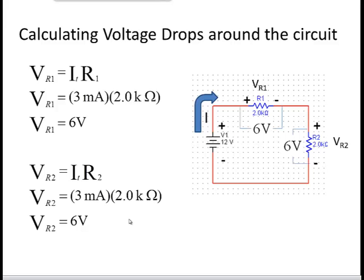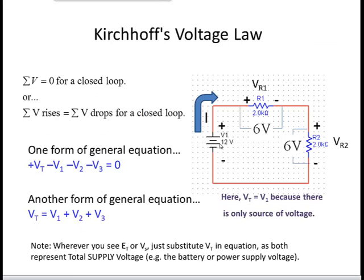What I wanted to prove here is that the voltage drops across both resistors equal the supplied voltage. There's a formal name for this — Kirchhoff's Voltage Law. Kirchhoff said that the summation of the voltages for any closed loop is equal to zero. Or put another way, the summation of the voltage rises, or the supplied voltage, has to equal the summation of the voltage drops across each of the components. One way of writing this is that the supplied voltage minus any of the voltage drops equals zero. Another way is that the supplied voltage equals the summation of the voltage drops.